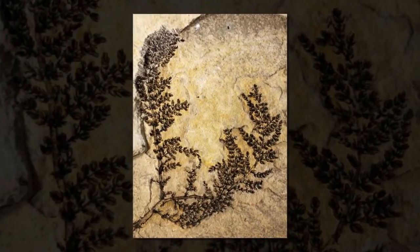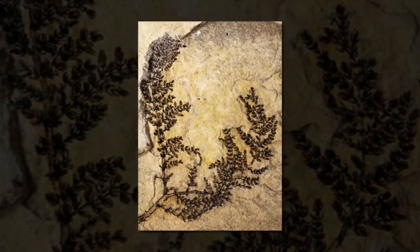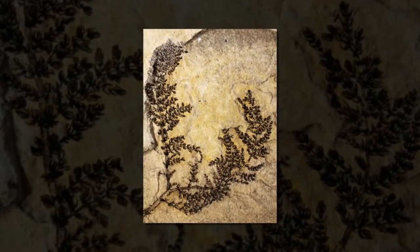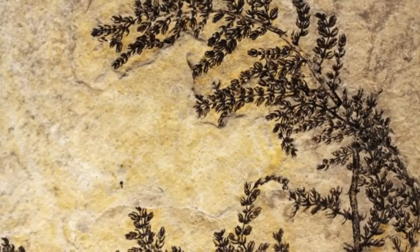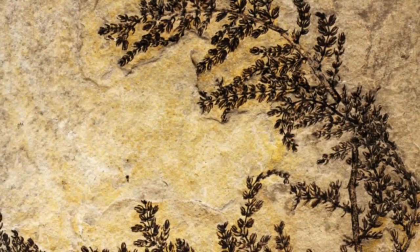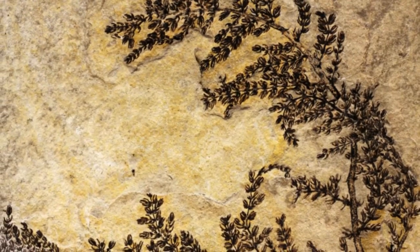Indiana University paleobotanist David Dilcher and colleagues in Europe have identified a 125 million to 130 million year old freshwater plant as one of the earliest flowering plants on earth.